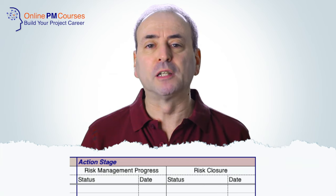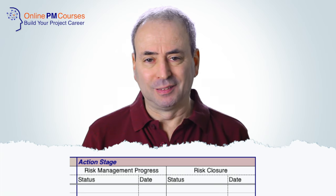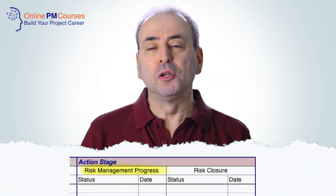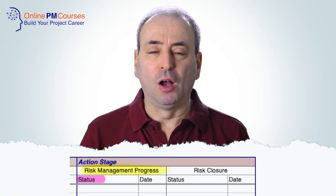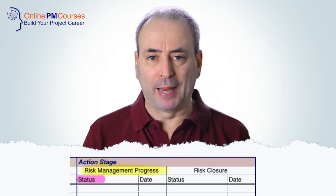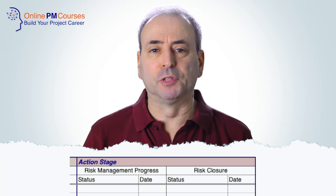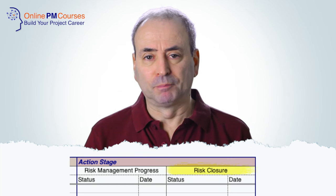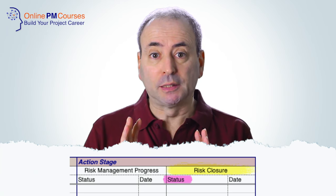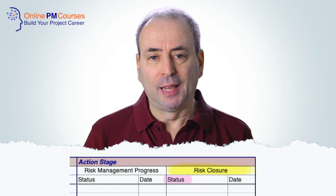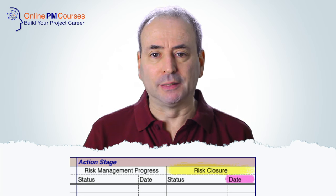The fourth part of your risk register is all about action. The first set of fields are about progress — a narrative field for status of that risk and progress on managing the plan, with a date against that status. Finally, I'd have a section for risk closure: what is the status? Has the risk gone away? Is it no longer a threat? Has it been managed out, or ceased to be a threat for natural reasons? Has it materialized and been dealt with? And the date at which it ceased to be a threat.